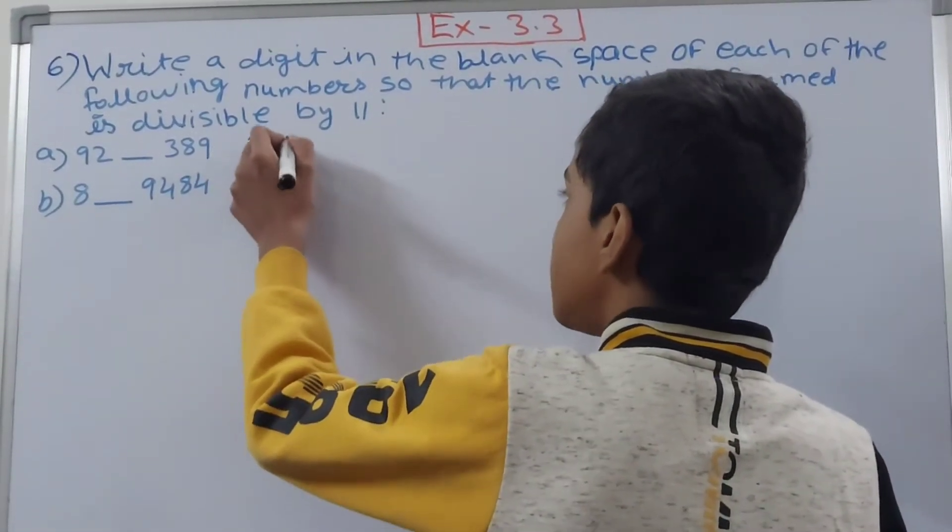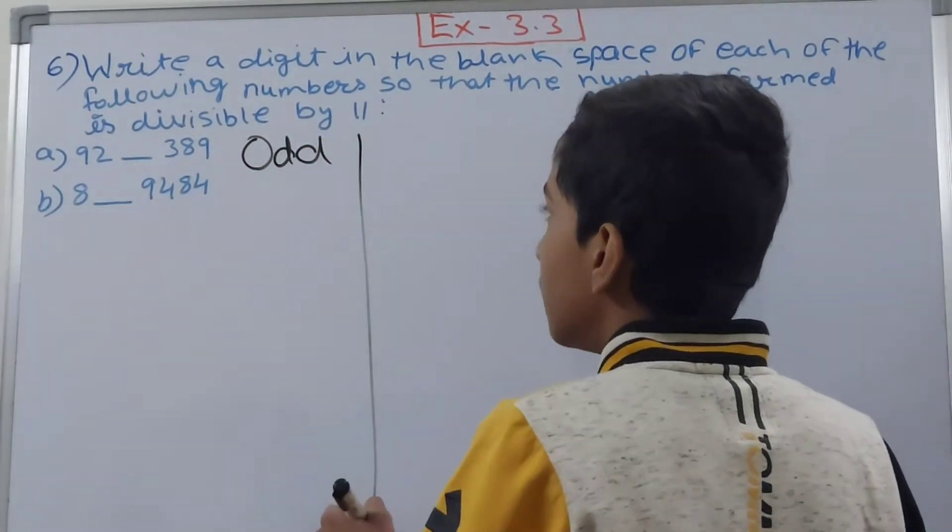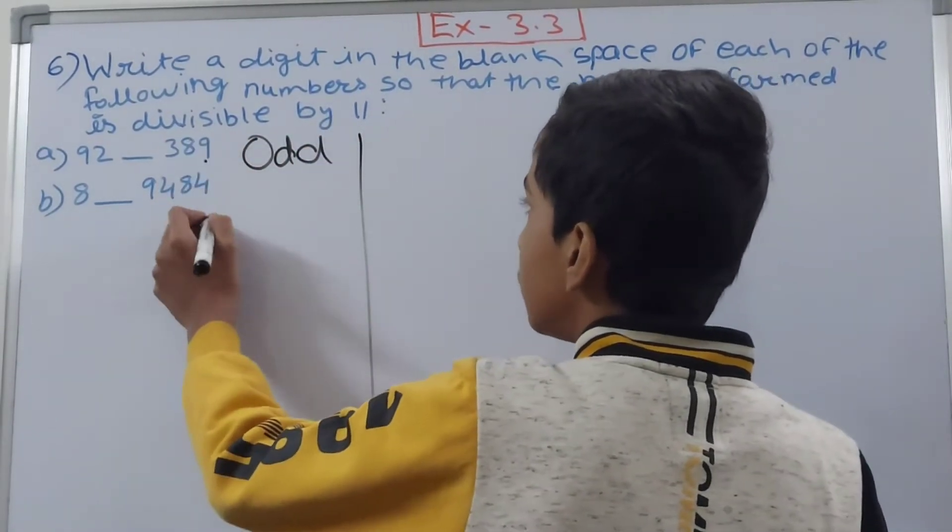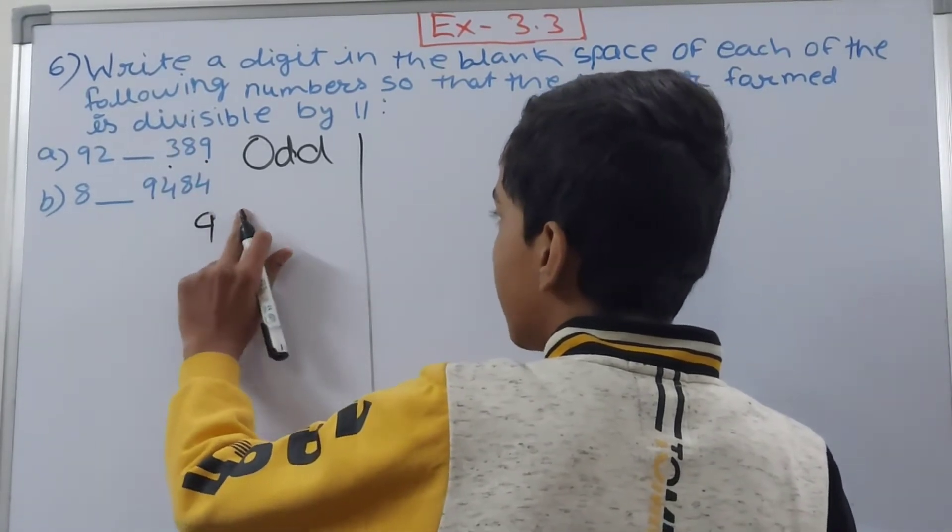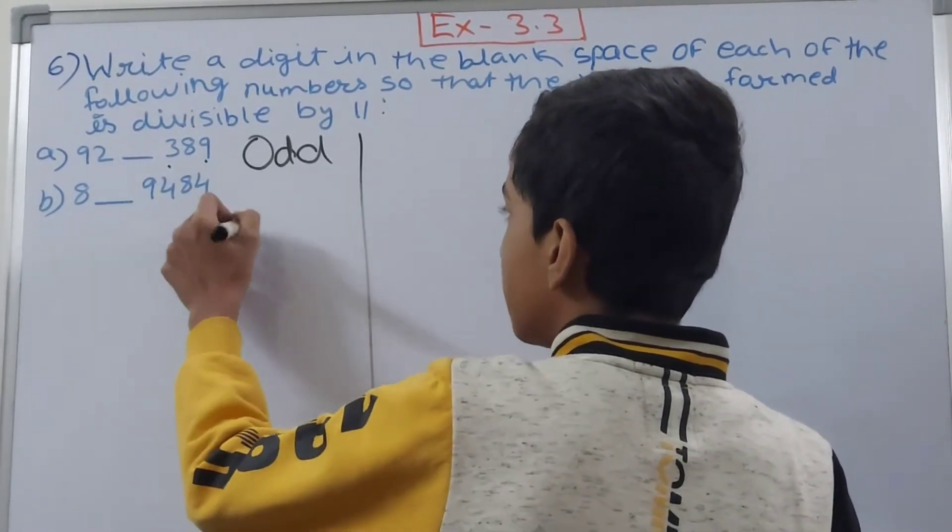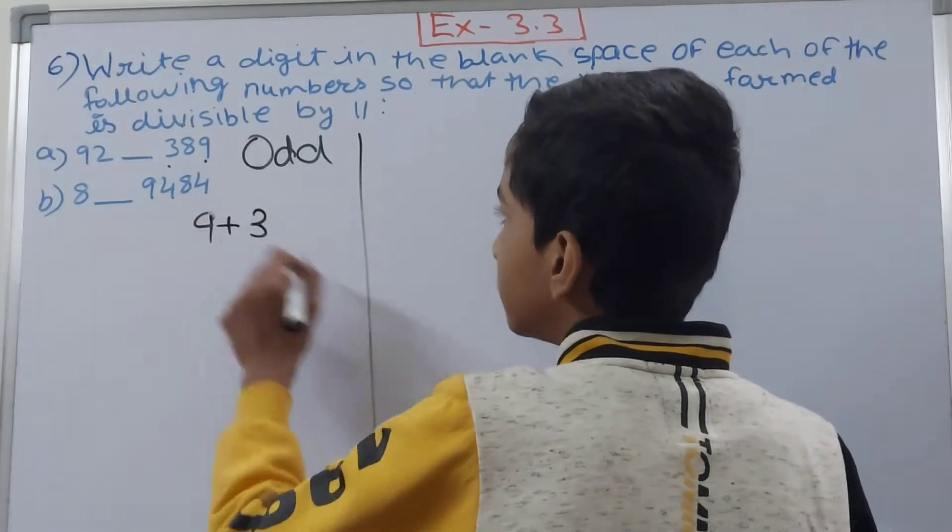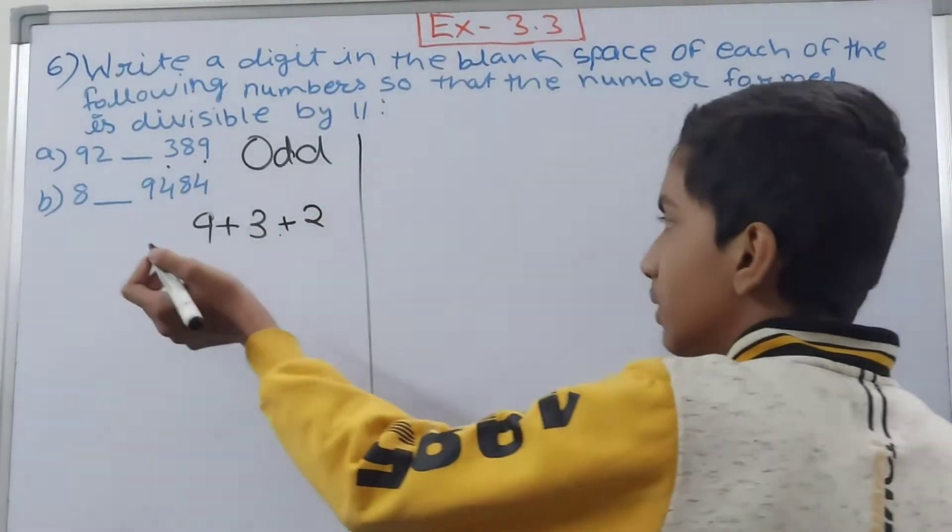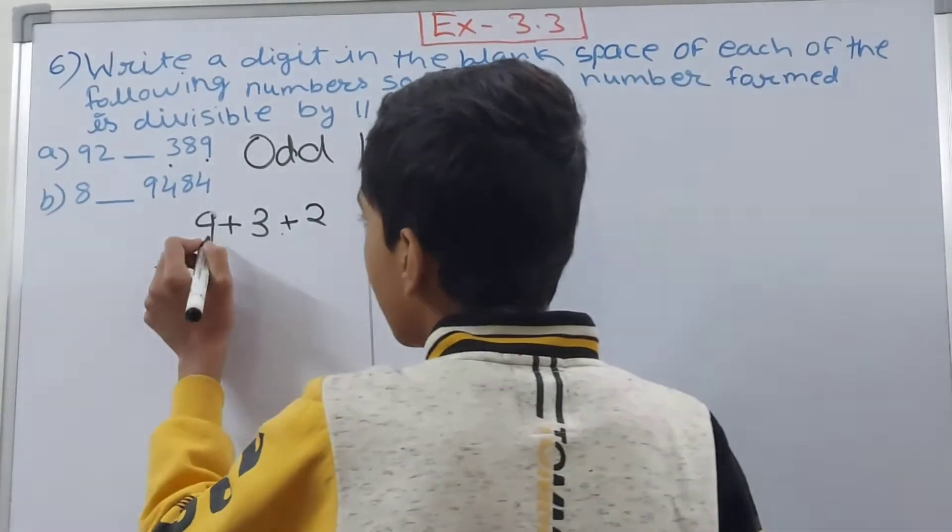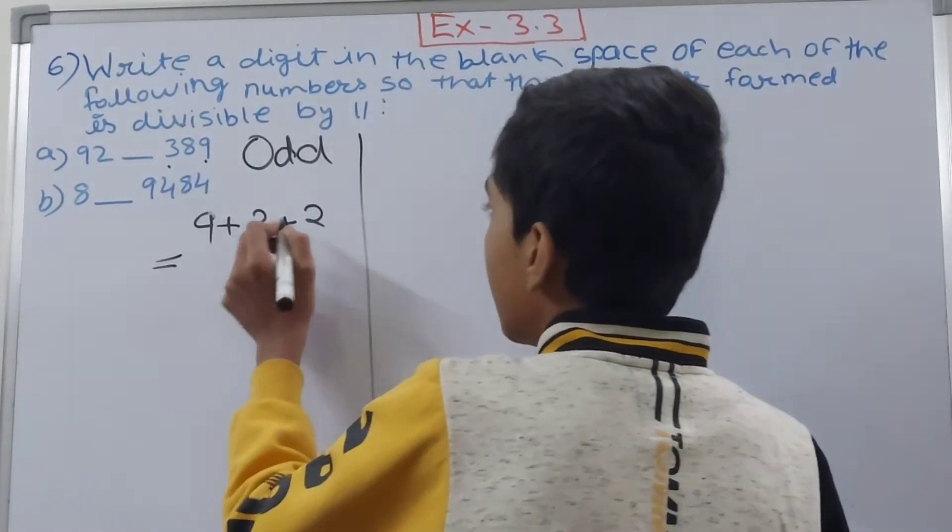First we will see at the odd places. The digit we have is 9, then you get 3, so 9 plus 3, then after 3 you have 2. So you are having 9 plus 3 plus 2. 9 plus 3 is 12, plus 2 is 14.